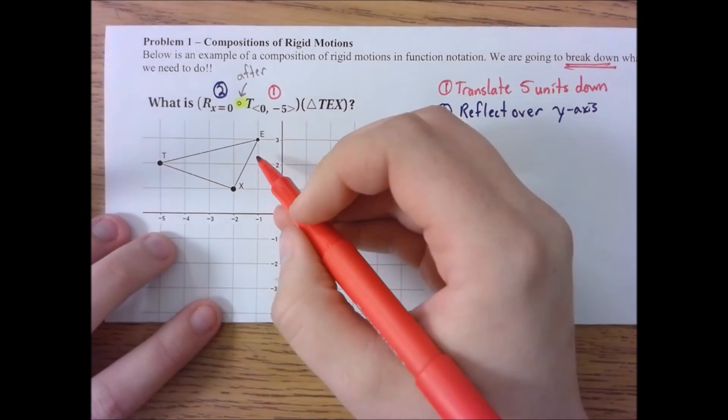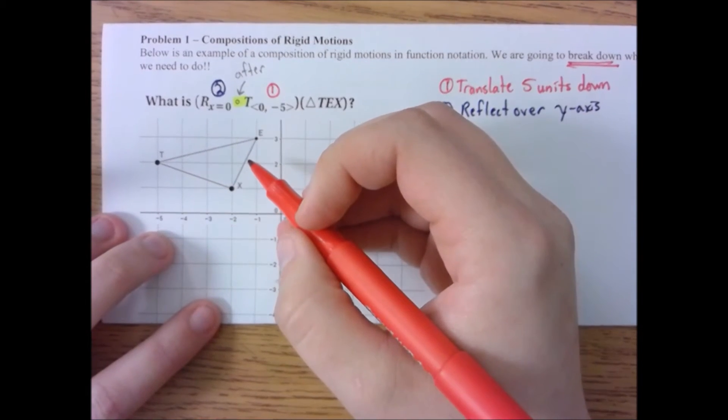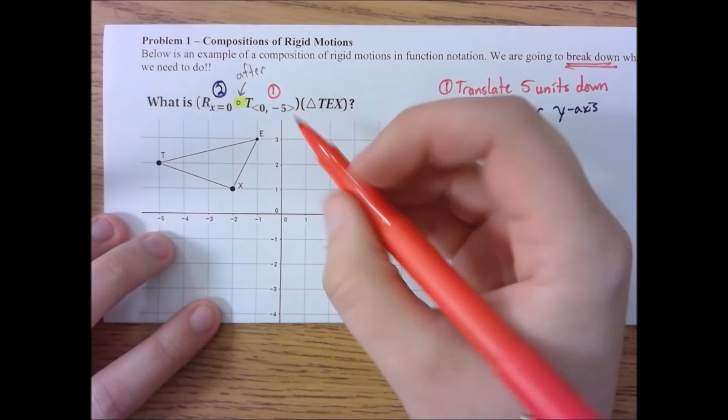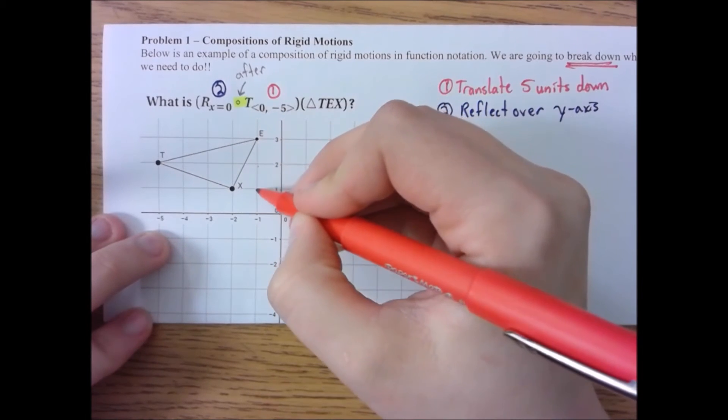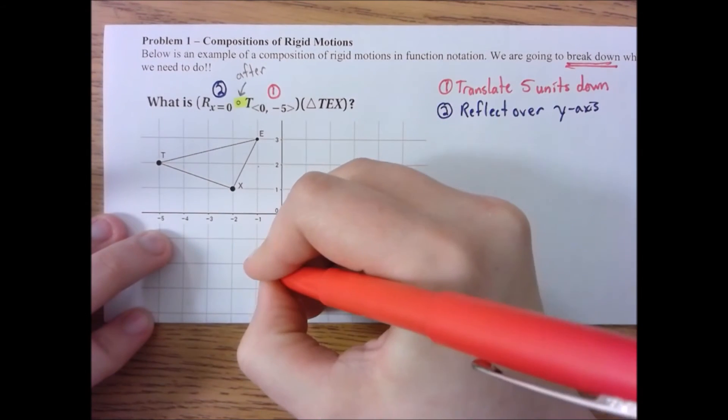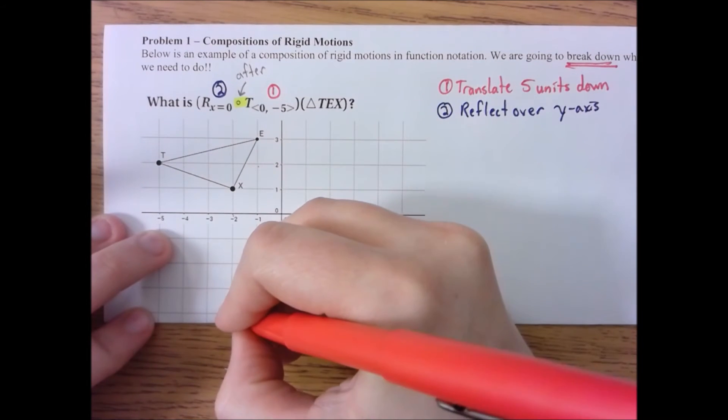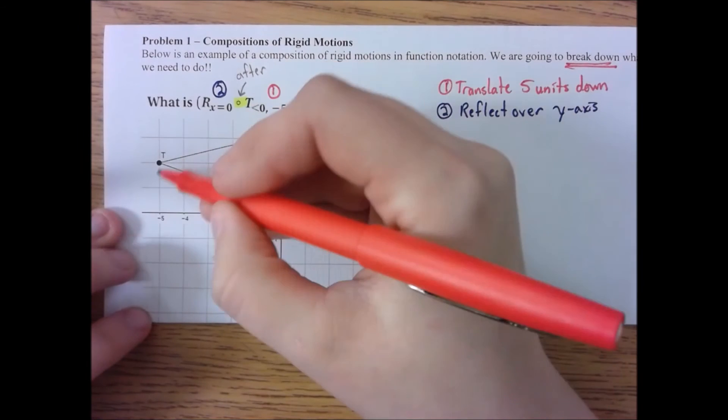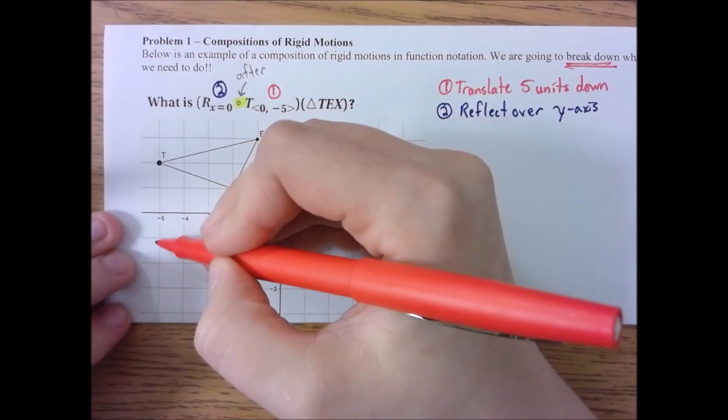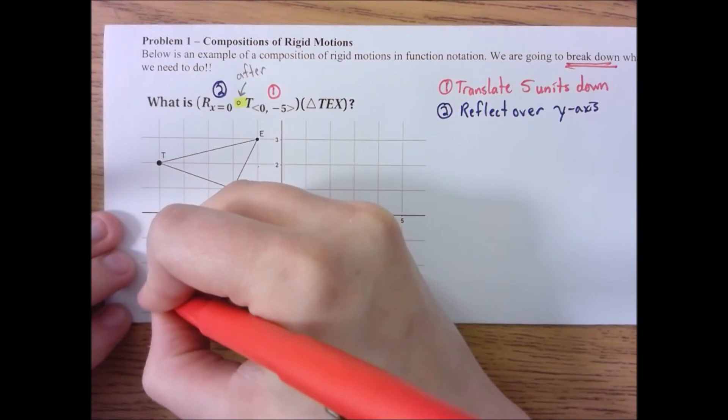So I'm going to go ahead and take TEX, if you will, and do that first transformation. We're going to go five units down. One, two, three, four, five. One, two, three, four, five. I can count to five. That's good. We're on a roll. One, two, three, four, five. So here we are.